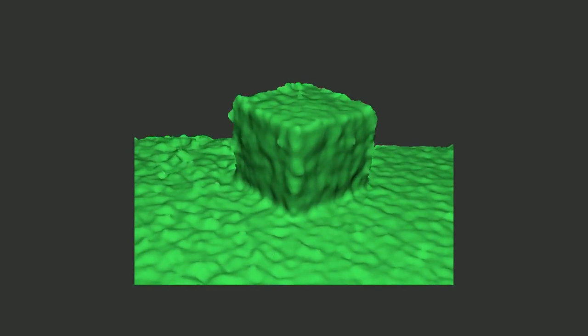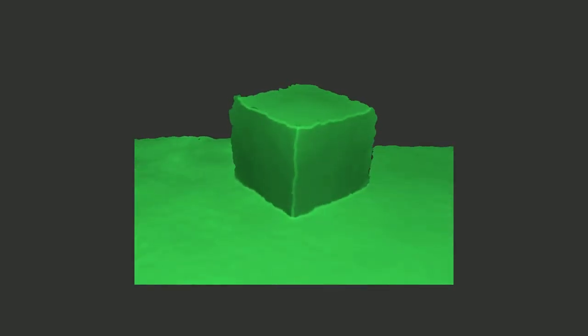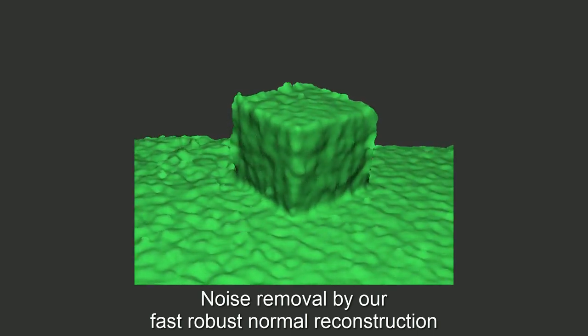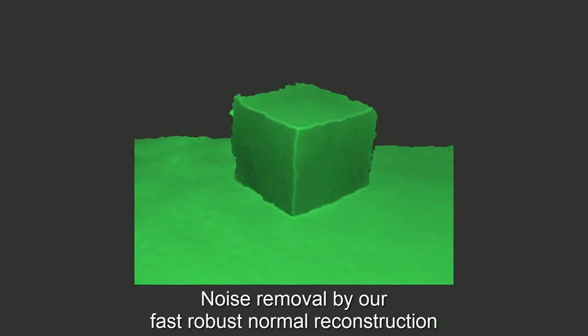We show how to extend our continuous formulation from before to be applicable to a continuous representation of the object's normal field. This allows for a robust local reconstruction of splat normals at sharp features.